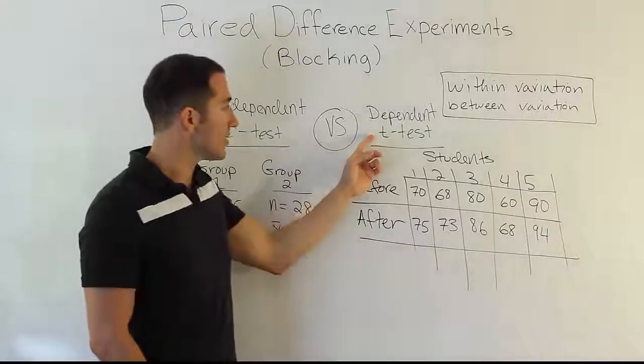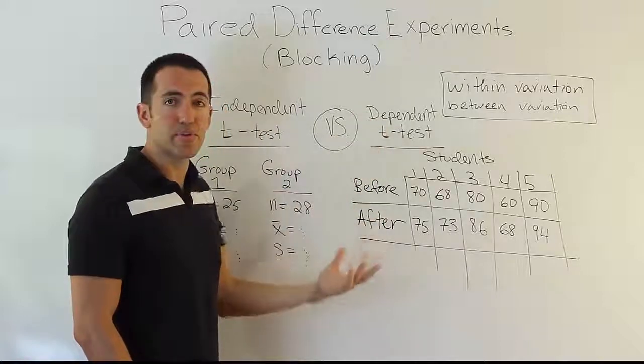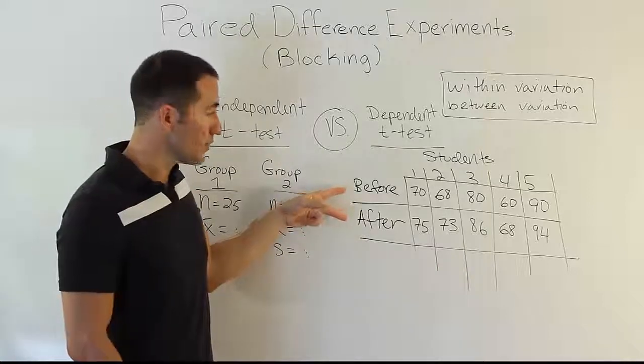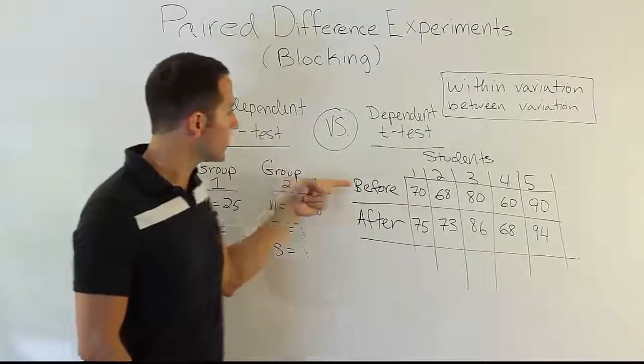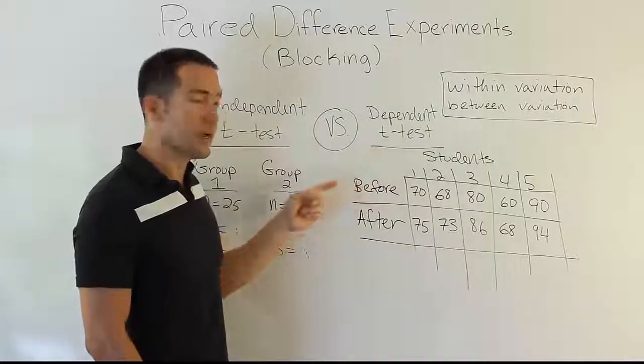In the dependent t-test, or the match-paired t-test, depending on how your book or your professor calls it, they're both the same. The dependent t-test has essentially two sets of data as well.